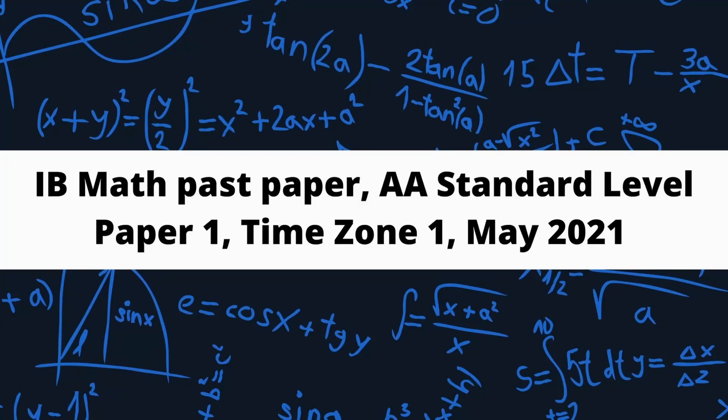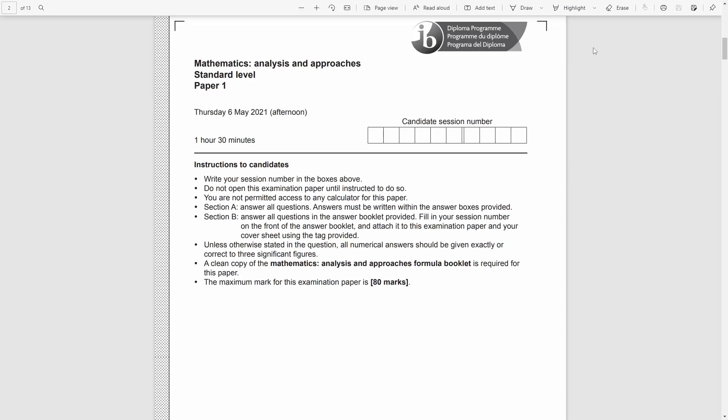Today we will talk about IB Math Past Paper, AA Standard Level, Paper 1, time shown 1 May 2021.